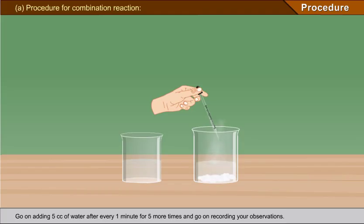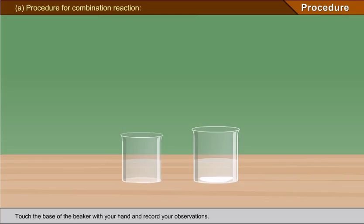Observations: As soon as the water comes in contact with the quicklime, it starts crumbling, producing a sound of crackling noise. It gives off steamy vapor.